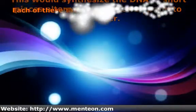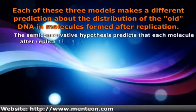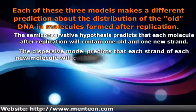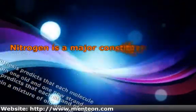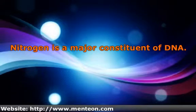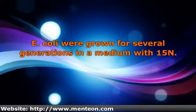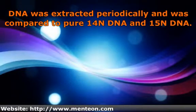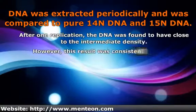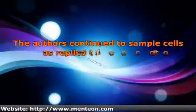Each of these three models makes a different prediction about the distribution of the old DNA in molecules formed after replication. Nitrogen is a major constituent of DNA. E. coli were grown for several generations in a medium with 15N. DNA was extracted periodically and was compared to pure 14N DNA and 15N DNA. The authors continued to sample cells as replication continued.